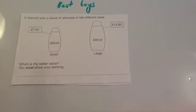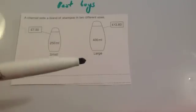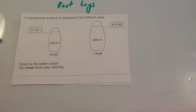Here we've got another example. A chemist sells a brand of shampoo in two different sizes: 250 mils for £7.50 or 400 mils for £12.80. Which one's better value for money? Using the first method, you're going to divide the cost by the amount given. This time it's in milliliters. Whenever it's pounds like this and milliliters, I tend to change my pounds into pence. That way, because you're dealing with one milliliter, the cost for that is usually easier to consider in terms of pence.